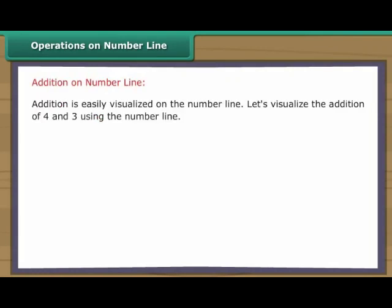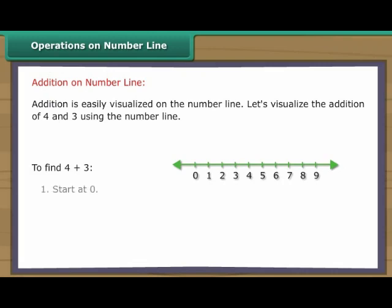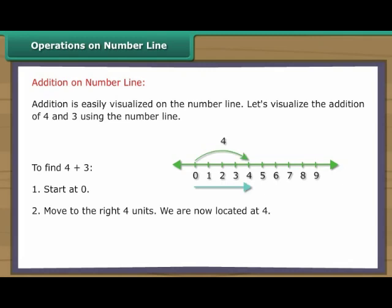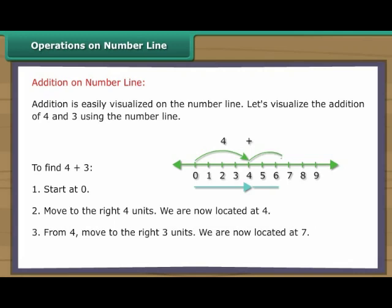Addition is easily visualized on the number line. Let's visualize the addition of four and three. To find four plus three: one, start at zero. Two, move to the right four units — we are now located at four. Three, from four, move to the right three units — we are now located at seven. Thus, four plus three is equal to seven.